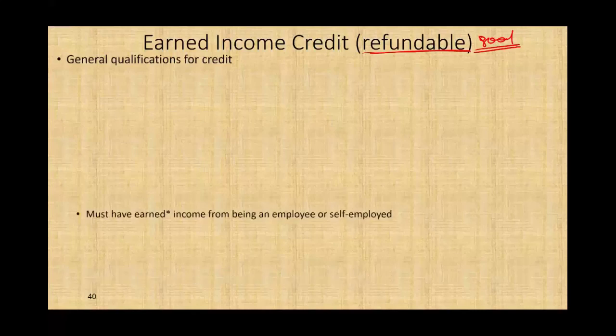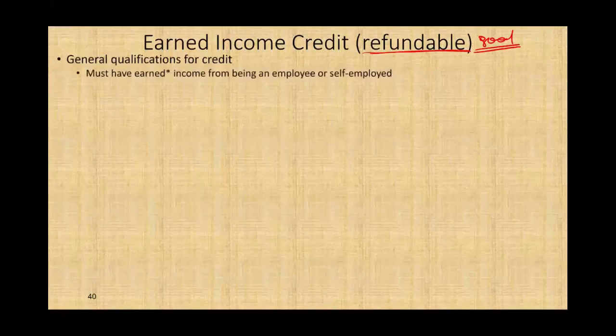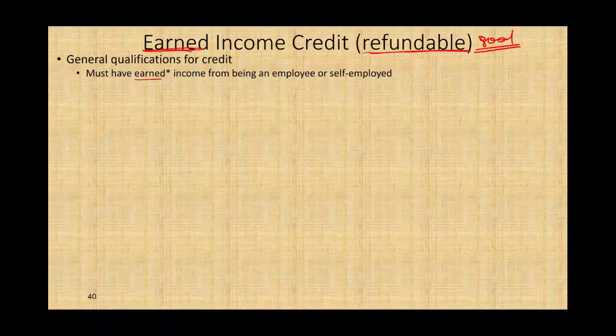The first requirement for the Earned Income Credit: you must have earned income, because it's called the Earned Income Credit. That means you have to have a W-2, a Schedule C — you have to have some active income. You are working commissions, salaries, and so on, either as an employee or self-employed.